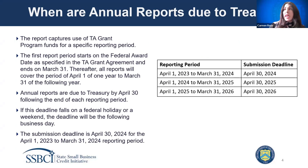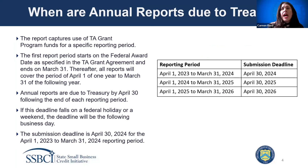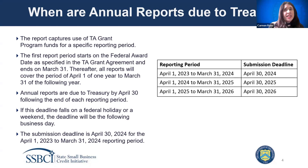Now let's review when annual reports are due to Treasury. The first reporting period starts on the federal award date as specified in the TA grant agreement, and it ends on March 31st. After that first reporting period, all reports will cover the 12-month period from April 1st to March 31st of the following year. Annual reports are due to Treasury by April 30th, following the end of the reporting period — the same day as the semi-annual report — and you have 30 days following the end of the reporting period to complete and submit the data. If the deadline falls on a federal holiday or a weekend, the deadline will be the following business day.